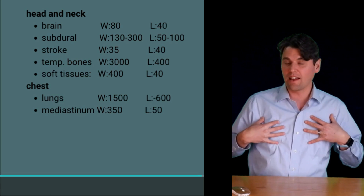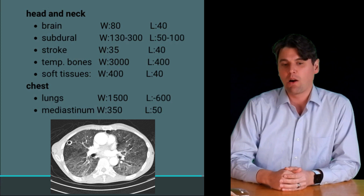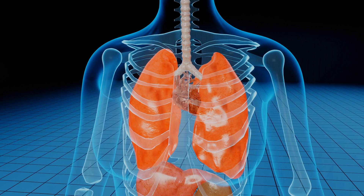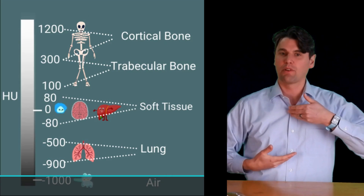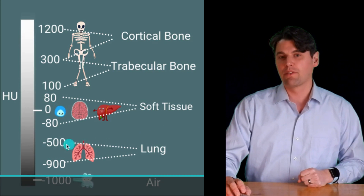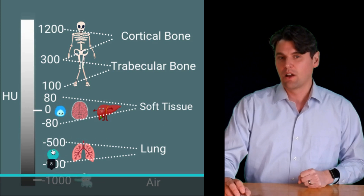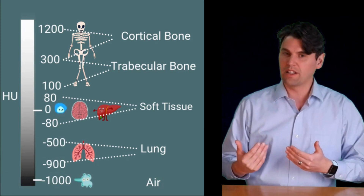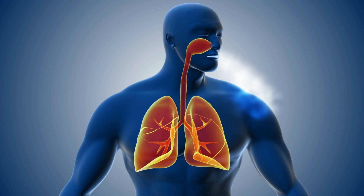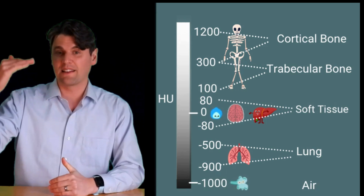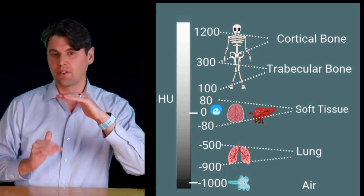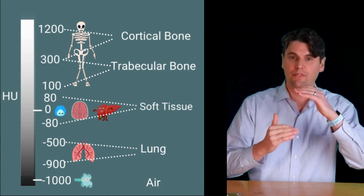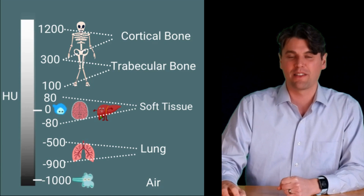Moving down to the chest, there are a couple of different window widths important to consider — one for the lungs and one for the soft tissue of the mediastinum. For the lungs, we want relatively wide coverage centered at a lower level because lung tissue has a good fraction of air: a window level of around minus 600 and a window width of around 1500. For the mediastinum, we'd want a window level of around 50 and a window width of around 350 to 400, similar to soft tissue imaging.